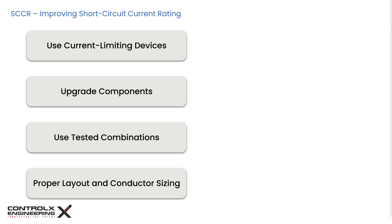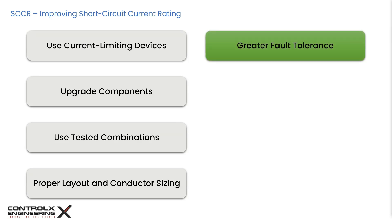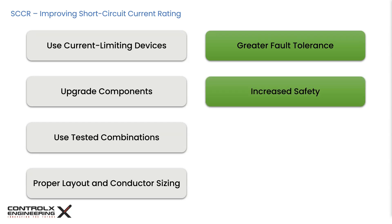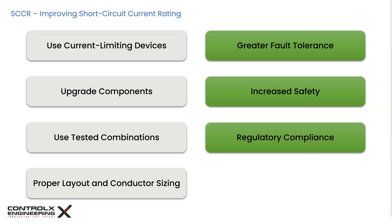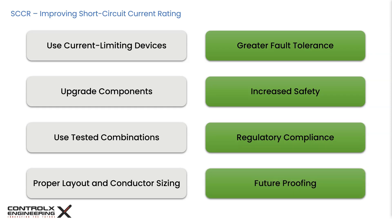We generally want higher SCCR for electrical systems and components. A higher SCCR means the equipment can withstand larger fault currents without failing — especially important in industrial environments with large power supplies. Higher SCCR rated equipment reduces the risk of fires, explosions, or electrical failure during a short circuit. It also ensures regulatory compliance with the safety standards discussed, and provides future-proofing by giving more flexibility for system expansions or upgrades as the system can safely accommodate higher fault currents.